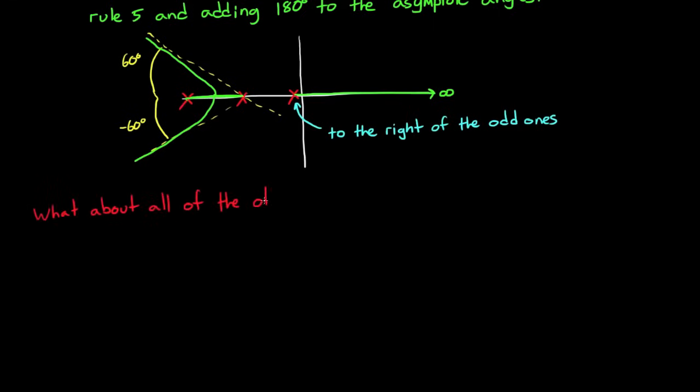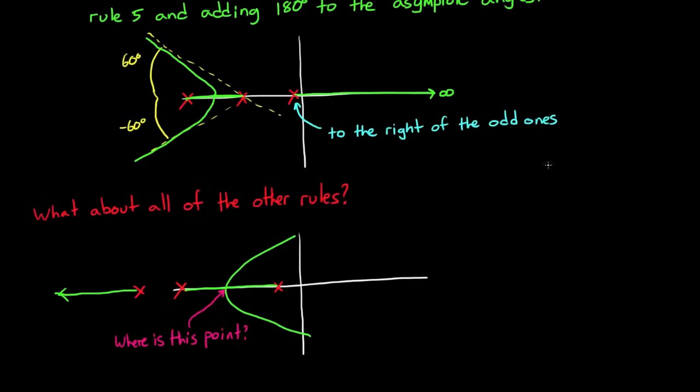Now I know that I kind of blazed through all of these rules really quickly, and I've probably added more questions than answers for you. For example, you might be wondering, what about all the other rules you've seen in textbooks and online? Things like, where exactly do the breakaway and break-in points lie on the real axis? And what's the angle of departure from a complex pole or a complex zero? And where does the locus cross the imaginary axis? Or how do I figure out what value of K or what gain is associated with a particular point on the locus? And those are all good questions, but I'm not going to go over any of those rules in this video.